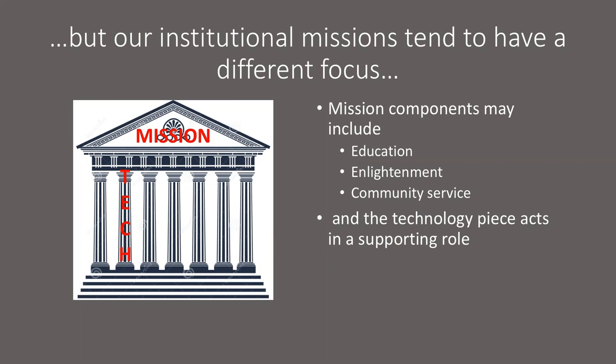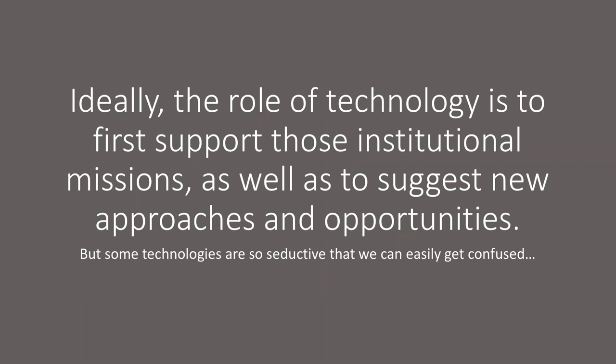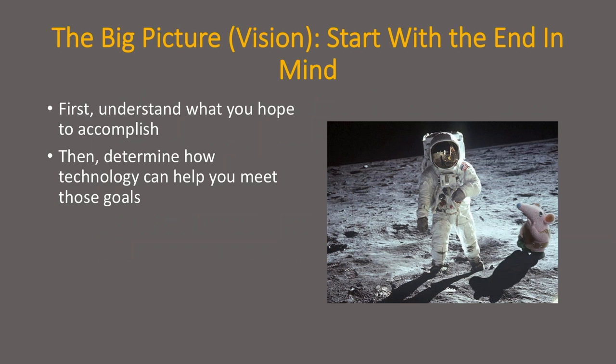My ideal for technology is to make sure it's first supporting institutional missions, as well as to suggest new approaches and opportunities within that mission. Some tech is so awesome it's easy to get confused and we can start trying to form our mission around technology. While that is appropriate in certain situations — such as the Bexar Library near San Antonio — in most cases, for community libraries across the country, we're not here because of technology, but technology is here to support the things we need to do.